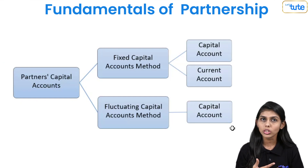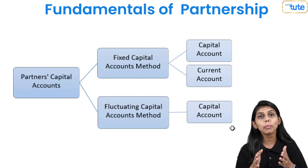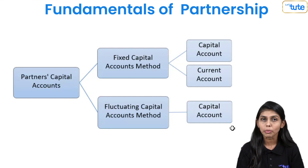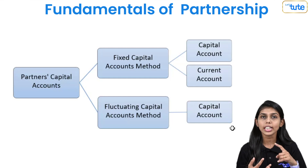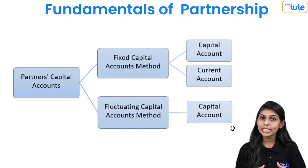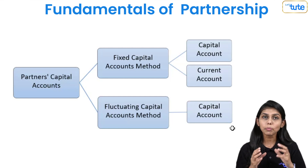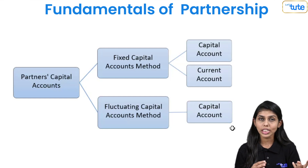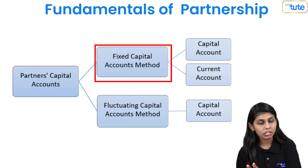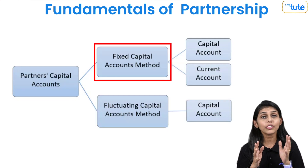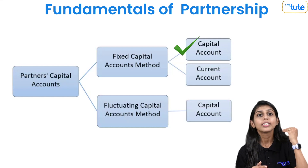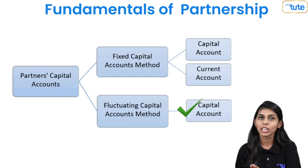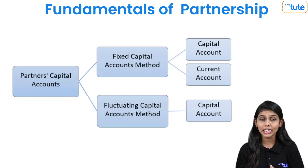In a partnership firm, there are more than one owners whom we call as partners. For each partner, a separate account is maintained because each partner has separate transactions with the firm — like capital introduced, drawings, share of profits or losses, or any other transaction. So separate capital accounts are maintained for each partner. There are two methods: fixed capital method and fluctuating capital method. Under the fixed capital method, two accounts are prepared — partner's capital account and partner's current account. Under the fluctuating capital method, only one account is prepared, which is the partner's capital account.